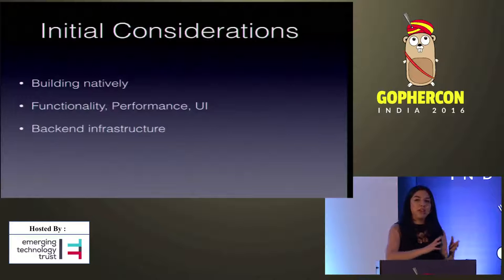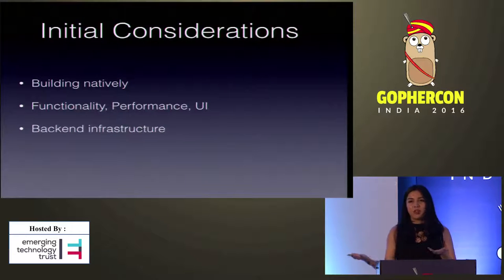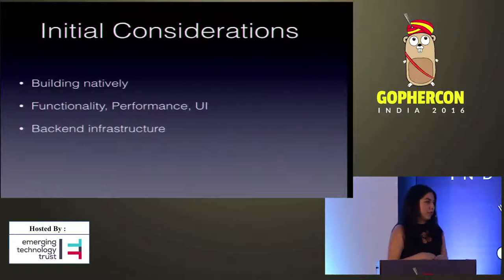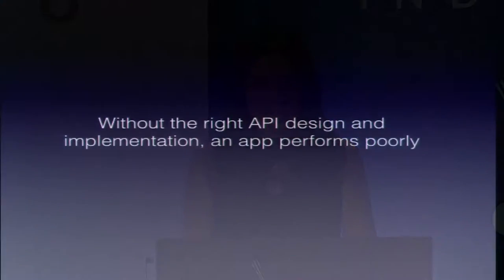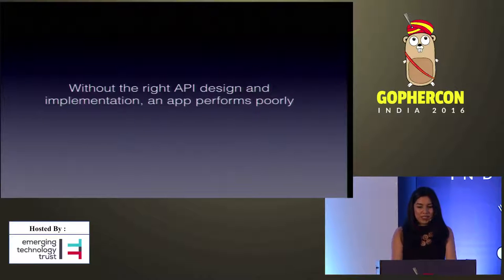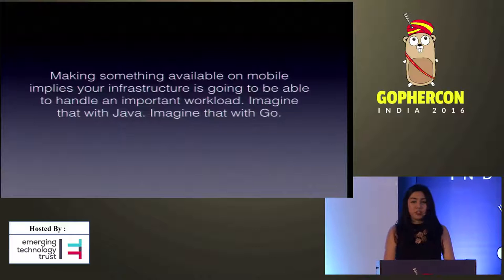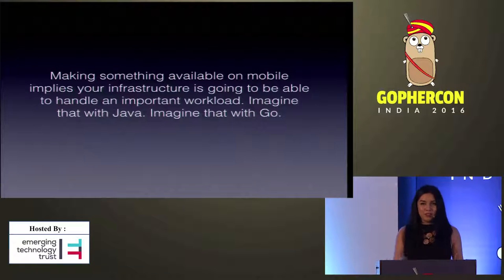Your back-end infrastructure for a mobile app is also super important, because you may have a great back-end for another type of system that may not work for a mobile environment. For example, it may carry a huge payload that is not affordable to transmit in a mobile app, because of battery or data usage. Without the right API design and implementation, a mobile app performs poorly. Go helps with all of this, and making something available on mobile implies your infrastructure must handle all that workload.